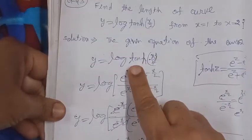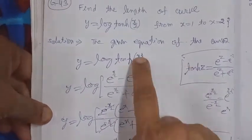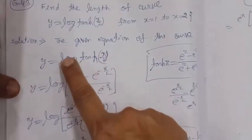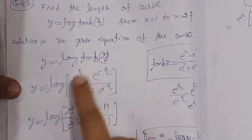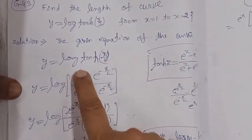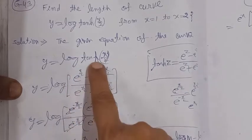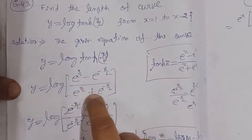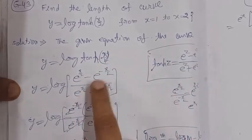Now when we apply the tanh(z) formula, in place of z we have x/2. So the value becomes: y = log[ (e^(x/2) − e^(−x/2)) / (e^(x/2) + e^(−x/2)) ], where z is replaced by x/2.